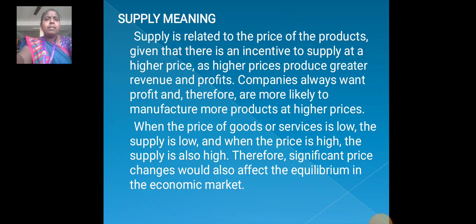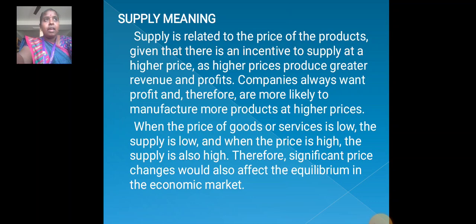Supply is related to the price of the products, given that there is an incentive to supply at a higher price, as higher prices produce greater revenue and profits. Companies always want profit and therefore are more likely to manufacture more products at higher prices. When the price of goods or services is low, the supply is very low. When the price is very high, the supply is also high. Therefore, significant price changes would also affect the equilibrium in the economic market.